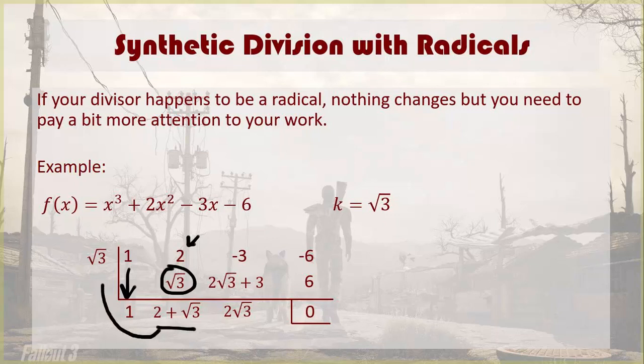When I take the square root of 3 times 2, I get 2 square root of 3. When I take the square root of 3 times the square root of 3, I get 3.